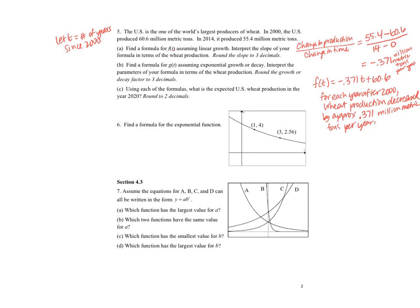On part B, it says find a formula for G of T assuming exponential growth or decay. What I can do here is I know that my initial value is 60.6. Then if I divide 55.4 divided by 60.6, I'll get my 14-year decay factor. That tells me what percentage change I have over a 14-year period. Well, I want to know the percentage change over a one-year period. So I can take that to the one-fourteenth power to get my one-year decay rate. So I get 0.9936. It wants me to round to three decimals, so let's say 0.994.